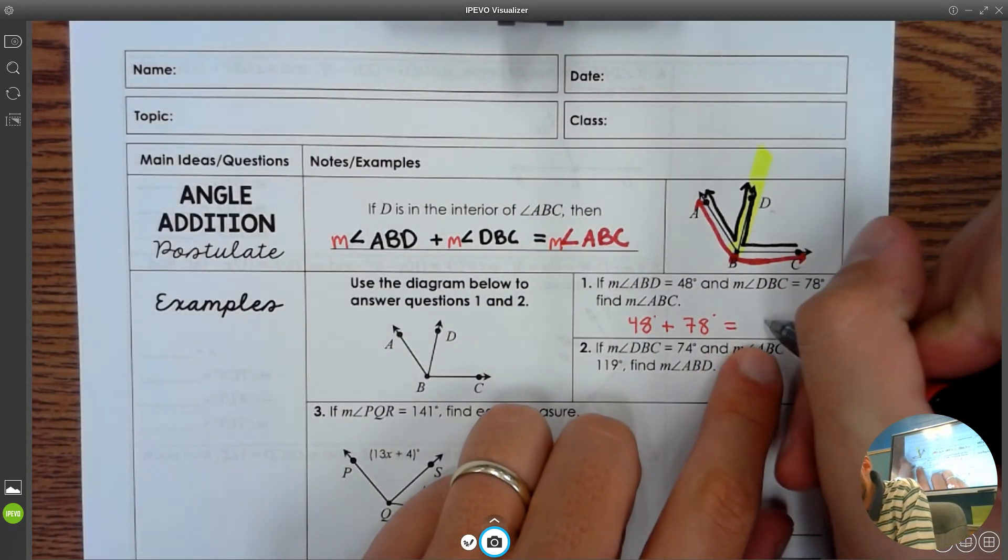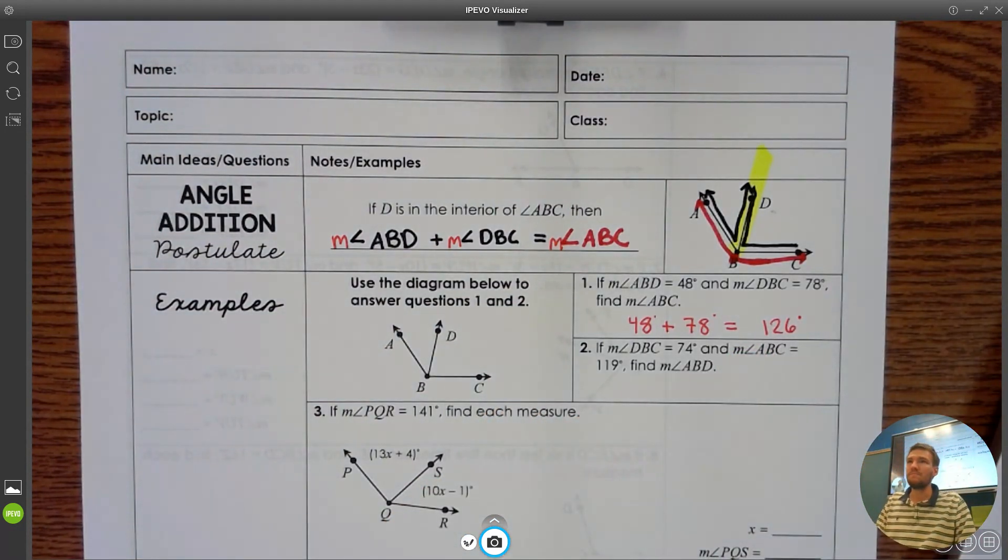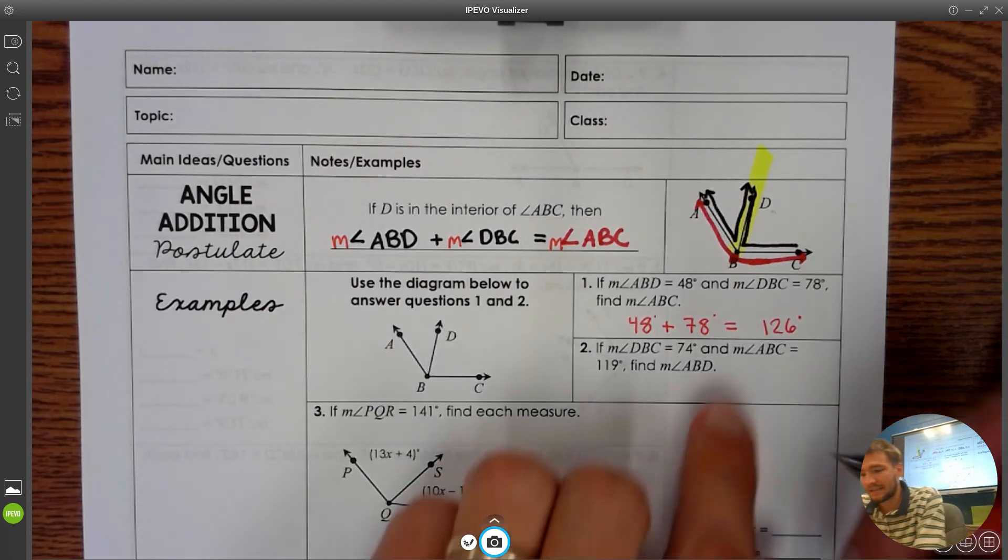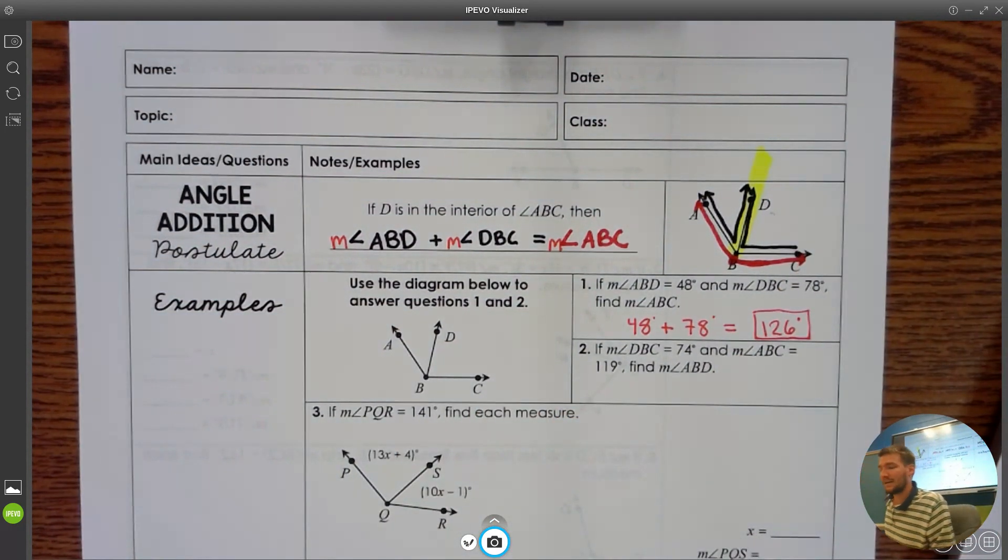And when you add up the two small parts, you should get the whole thing. 48 plus 78 is 126. That's the answer. The question said, what is the measure of angle ABC? And so the measure of angle ABC is 126.